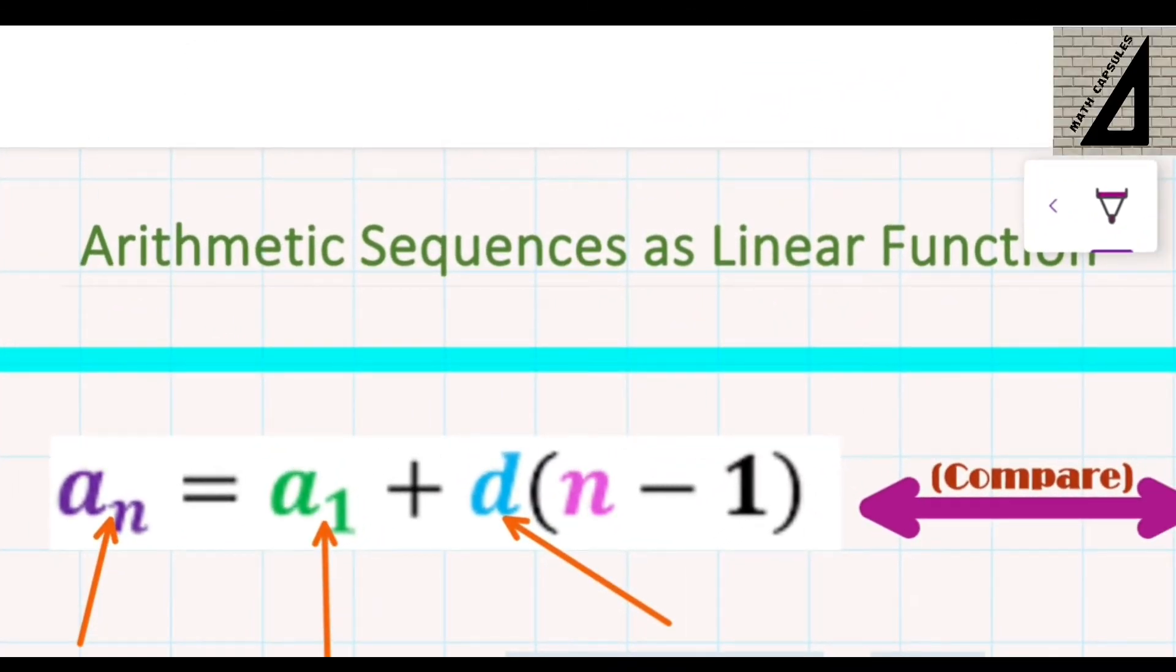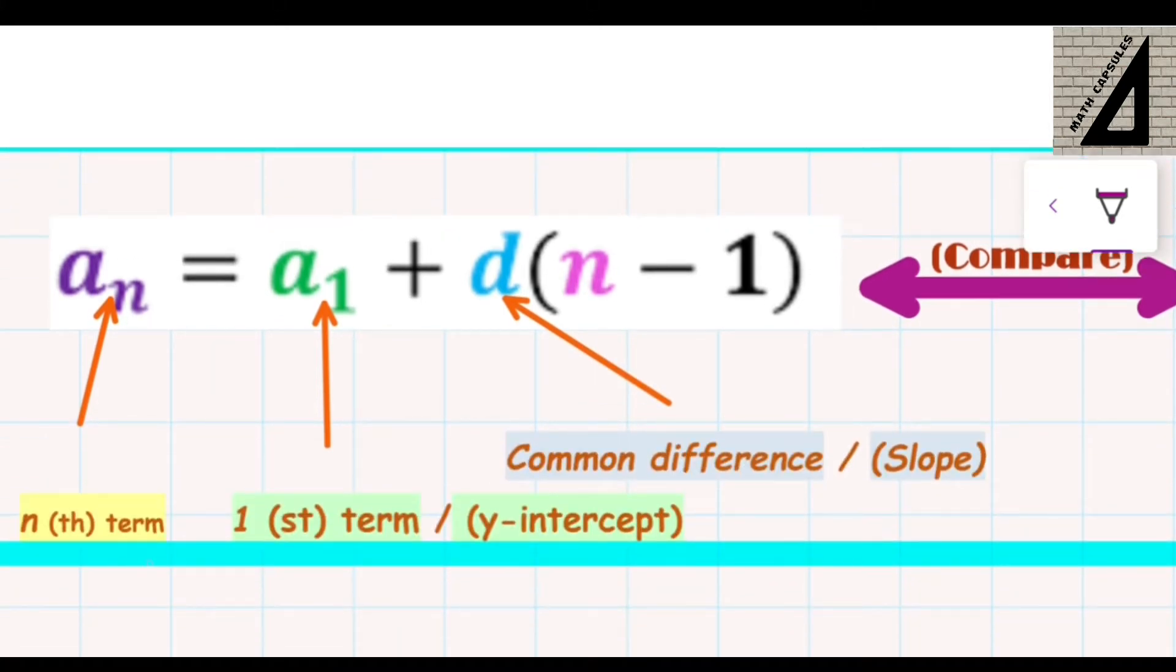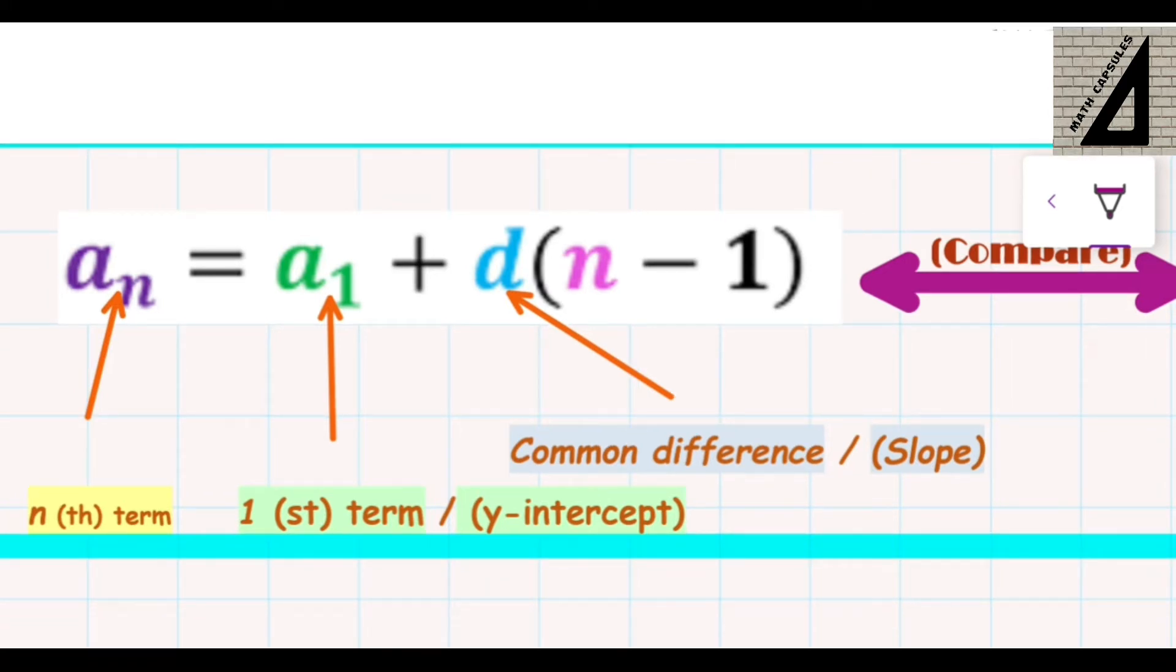The explicit formula for the arithmetic sequences is a sub n equals a sub 1 plus d times n minus 1, where n is the nth term and a sub 1 is the first term and d is the common difference and n minus 1 is the place before the nth place.